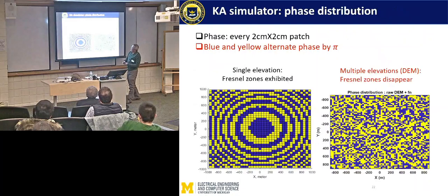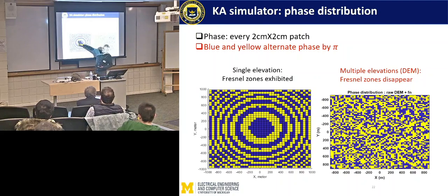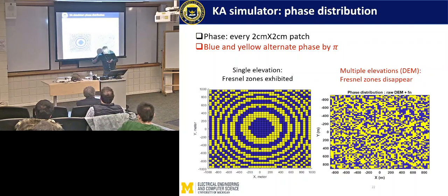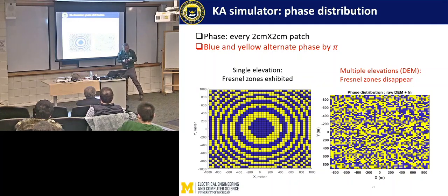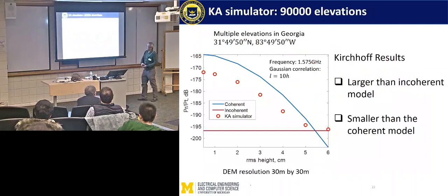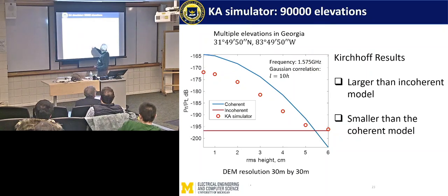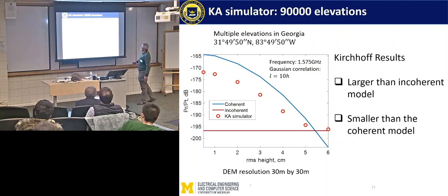The area is discretized into 250 billion patches, and you just brute force integrate. The implementation takes 40 hours using 20 cores. The first thing we show is the phase contributed by each patch. If you assume a single elevation, you see a Fresnel zone effect — very regular phase from each scattered part. But once you put in the elevation, a little bit of elevation destroys the phase — you get a lot of random phase. So the single-elevation coherent model is not appropriate. The simulation result is actually in between the coherent model and the incoherent model. Kirchhoff results are larger than the incoherent model and smaller than the coherent model.